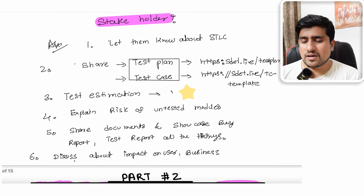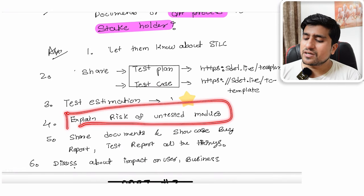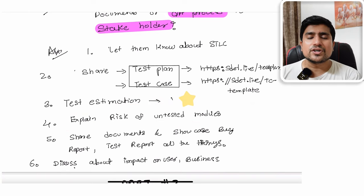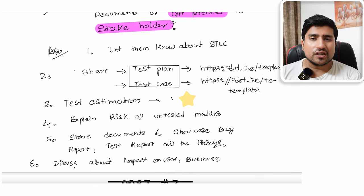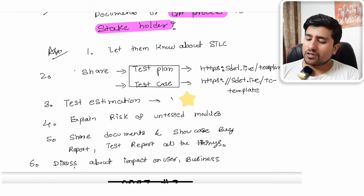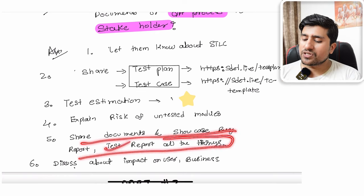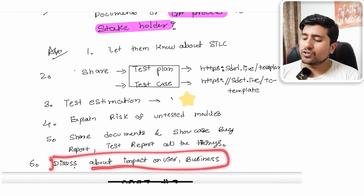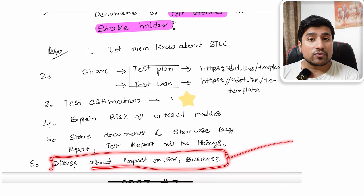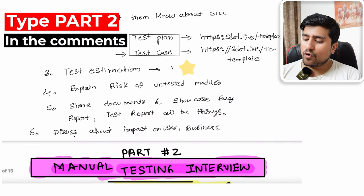In Agile, people often say documentation is not needed, but let them know these documents are essential for the QA process and will not hamper project timelines. If no QA process is followed, it leads to bugs being released and untested modules going to production — that is a risk. Share different test reports and bug reports so stakeholders understand the importance. Discuss the impact on customers and the business to make your case.